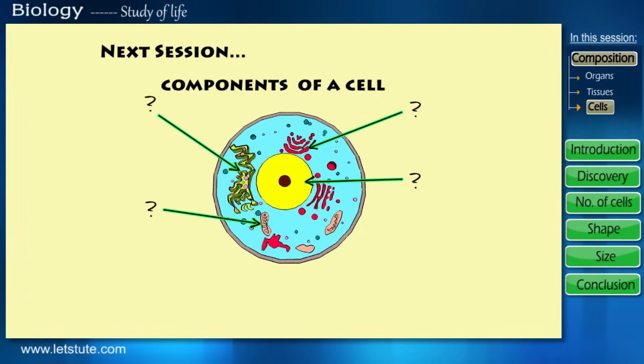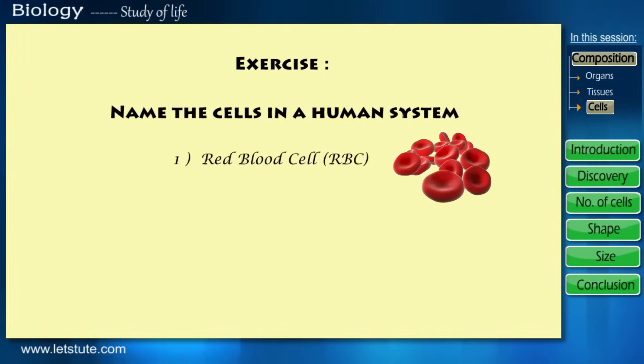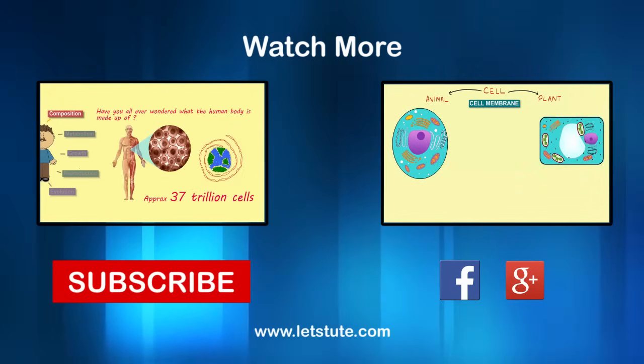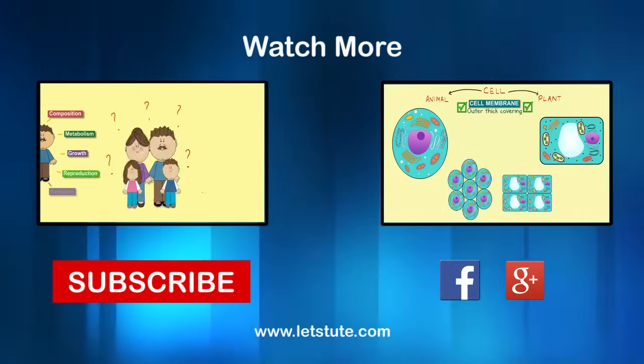So till then, why don't you try a small exercise? During this entire session I've tried naming a few cells found in the human system, like say for example an RBC. So can you try listing down the other types of cells found in the human system? Keep thinking about it. And till the next session, try following your curiosity. Do subscribe to know more on biology, and if you have any questions you can ask me in the comments below. Thank you so much.